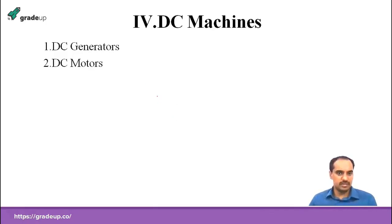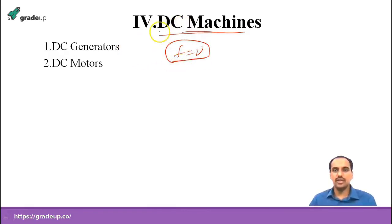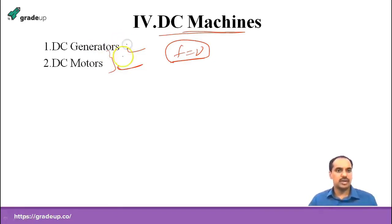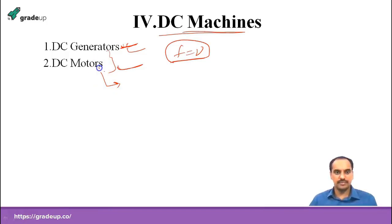The fourth topic is DC machines — this is the last topic in machines. DC means frequency is zero. The analysis part is very simple. There are DC generators and DC motors — construction-wise both are the same. They will ask questions on armature reaction, characteristics of DC generators, speed control of DC motors — which relates speed to back EMF divided by flux — and also parallel operation of generators.